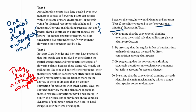Answer choice A: 'by arguing that conventional thinking overlooks the crucial role that pollinators play in plant reproduction.' We might put a question mark there — it doesn't explicitly say they don't compete — but the reliance on pollinators is what makes their interactions indirect as opposed to direct. We can probably take away that question mark; that one is likely correct.